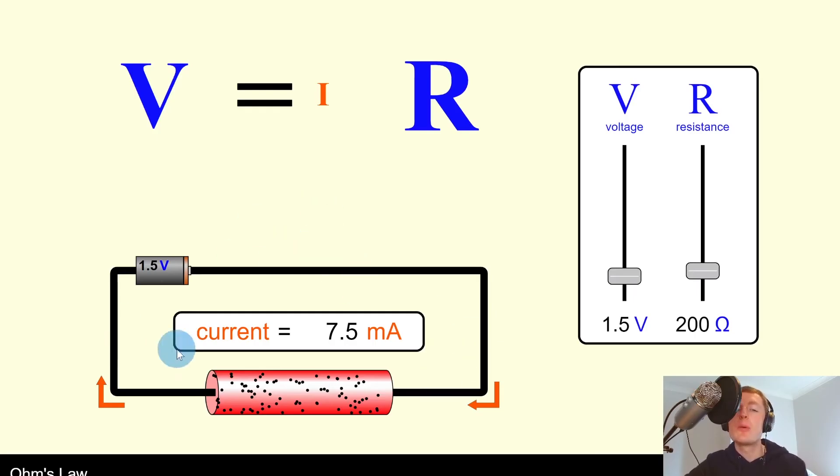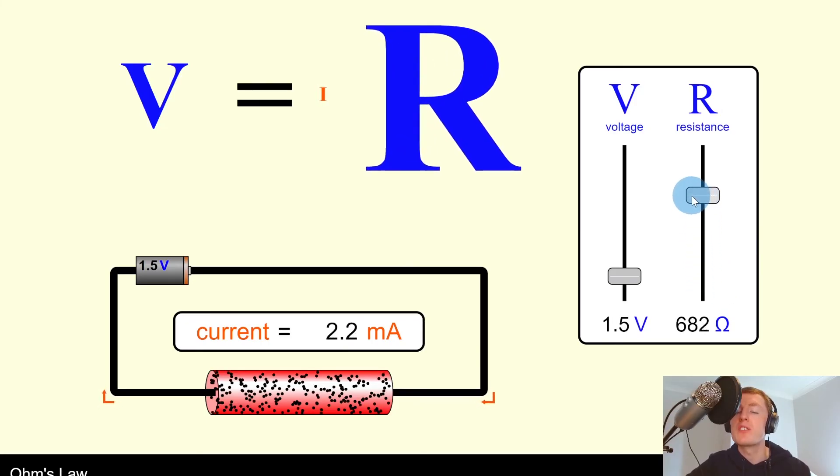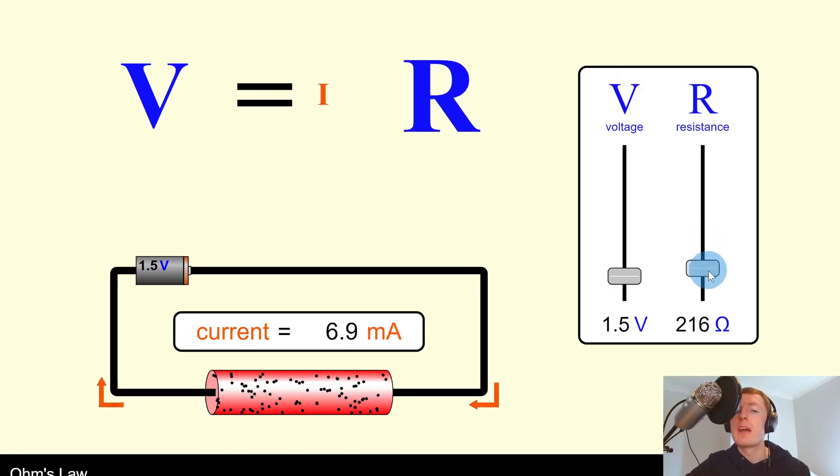Let's say I've got a simple circuit with a 1.5 volt battery here. I've got a current of 7.5 milliamps flowing through my circuit and it's going clockwise in this case. You can hopefully see that as I increase the resistance in my circuit, my current value gets smaller and smaller. And the opposite will also happen. So as I decrease the resistance, my current will get bigger and bigger.